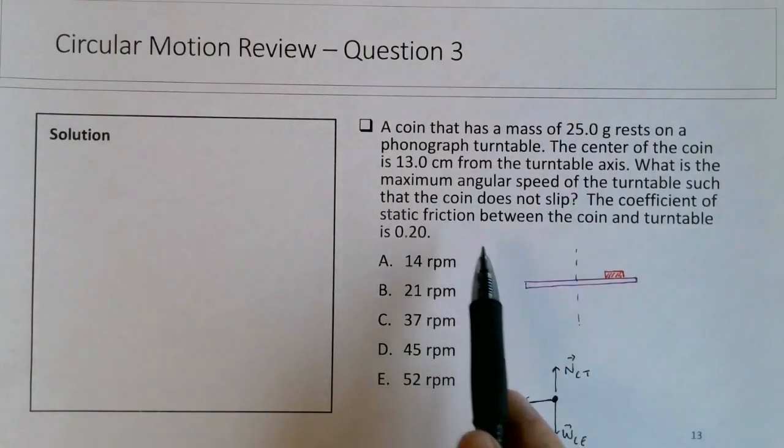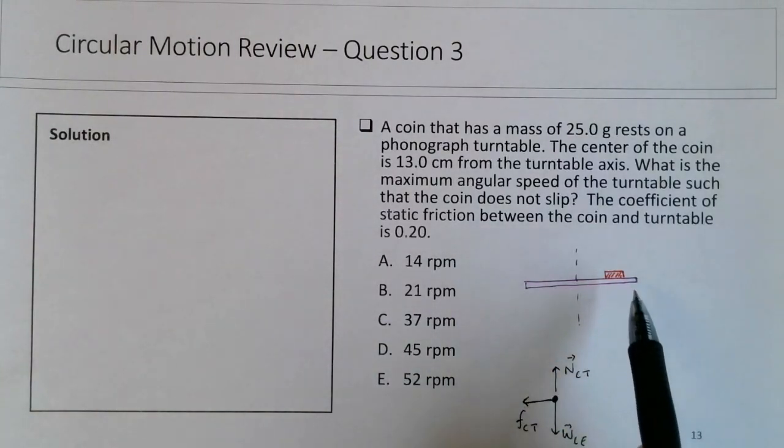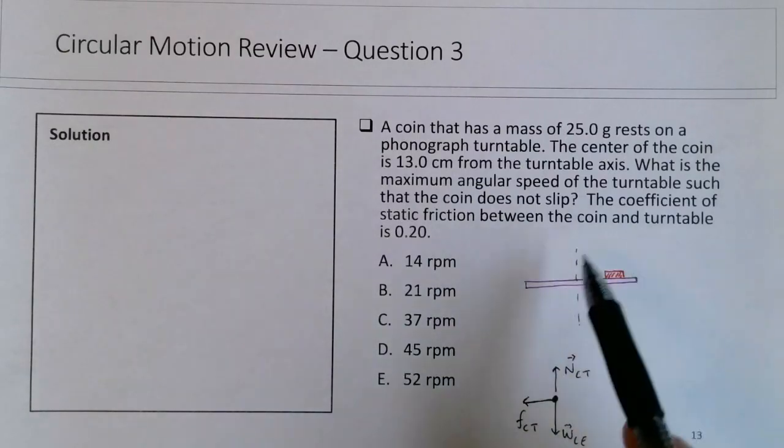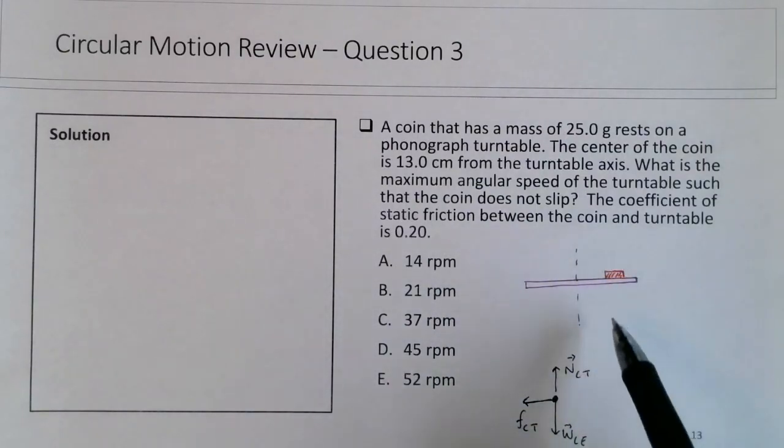Assuming the coin is not slipping, there's no relative motion between the coin and the turntable, so this is why it's a static friction force. If the coin is moving relative to the lab frame or the room, it's not moving relative to the turntable. So the static friction force is the force that causes this circular motion, so this will lead to the centripetal acceleration of the coin.